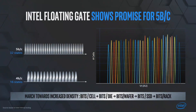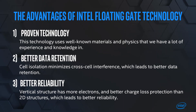The takeaway message here is that the march towards increased density is very much alive, and we are doing really well through our choices of architecture — resulting in better bits per wafer, more bits per SSD, and more bits per rack through all the innovations we do all the way from technology to SSDs.